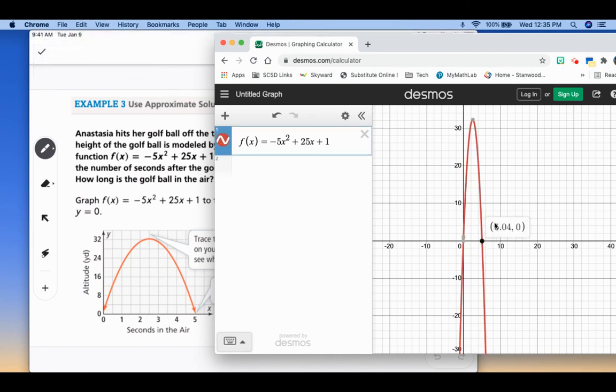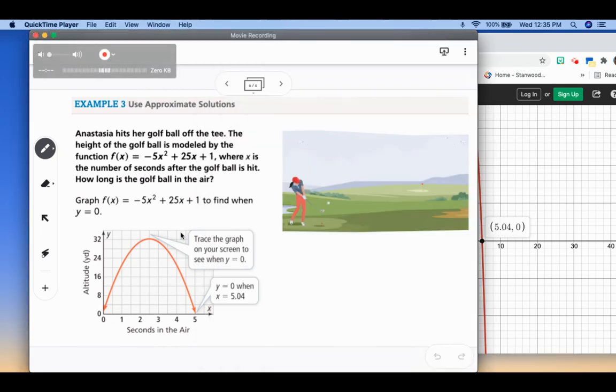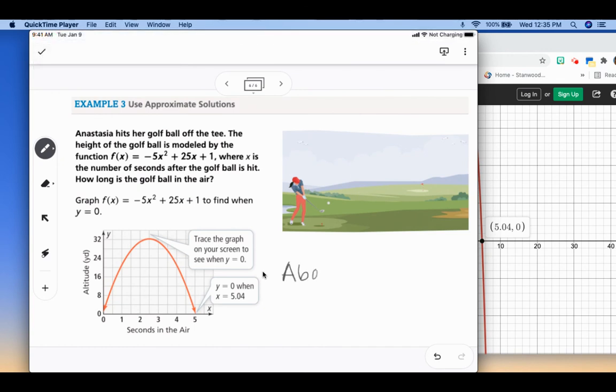You can see my graph looks a little different because they have zoomed into just that 1 through 5. But the nice thing about Desmos is I can click on that x-intercept so I can find the two x-intercepts. We know that the graph starts at a height of 1. That's my y-intercept. And then we want to know how long it's in the air. So that's 5.04, which you can see right here. So we would say that the ball is in the air about 5 seconds. So you can use the graphs to interpret the answers and approximate solutions. So that is 9-1.